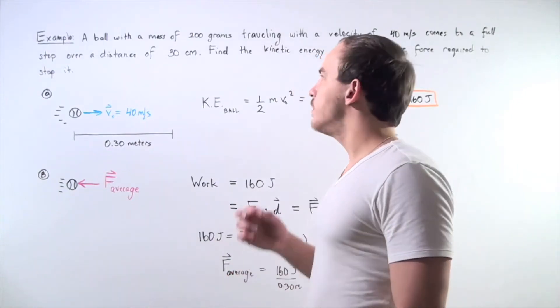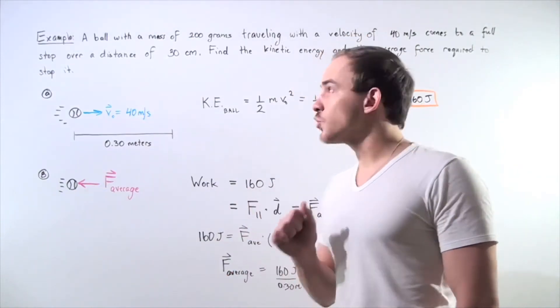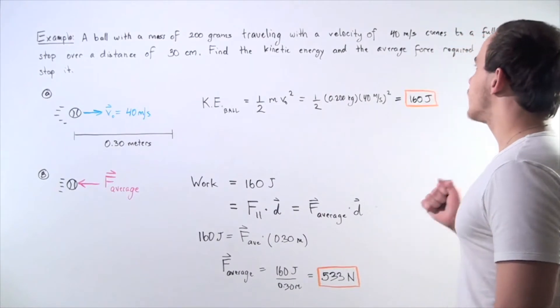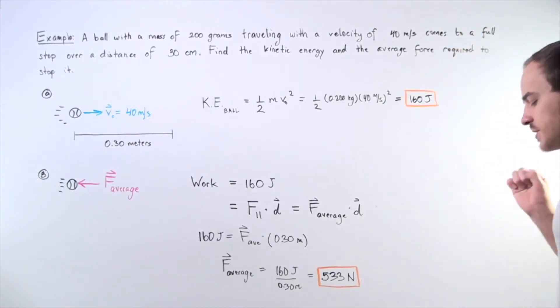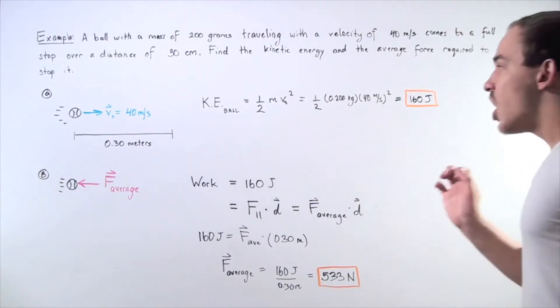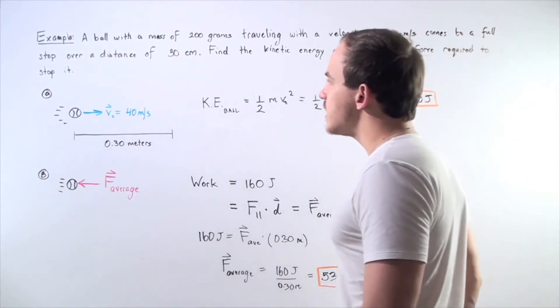Let's suppose that a ball with a mass of 200 grams is traveling with a velocity of 40 meters per second, and our ball comes to a complete stop over a distance of 30 centimeters.